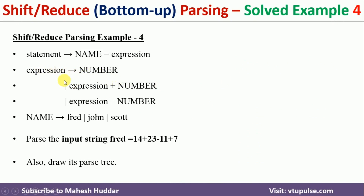In this case we have been given two grammars. The first one is: statement → name equals expression. The second one is: expression can be a number, expression plus number, or expression minus number. And the name can be either fred, john, or scott.